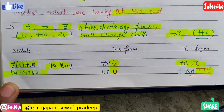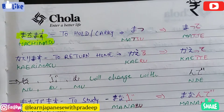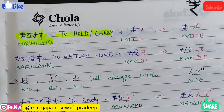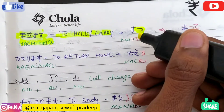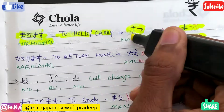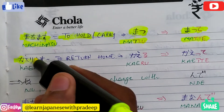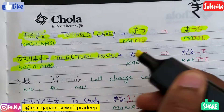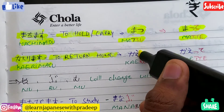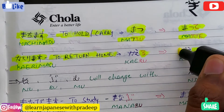The next example is machimasu, which means 'to hold' or 'to carry'. If you change it to dictionary form it becomes matsu, and this tsu at the end changes with tte, so it becomes matte. Our final example is kaerimasu, which means 'to return home'. Dictionary form is kaeru, and the ru changes with tte, so in te form it becomes kaette.